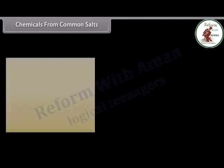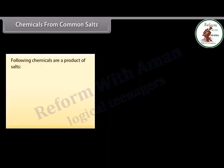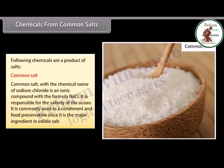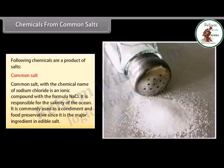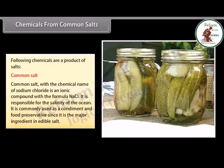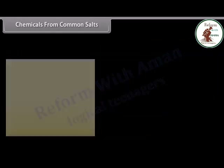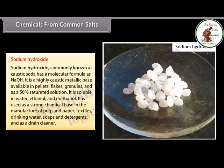Chemicals from common salts: common salt, with the chemical name sodium chloride and formula NaCl, is an ionic compound responsible for the salinity of the ocean. It is commonly used as a condiment and food preservative. Sodium hydroxide, commonly known as caustic soda, has the molecular formula NaOH. It is a highly caustic metallic base available in pellets, flakes, granules and as a 50% saturated solution. It is soluble in water, ethanol and methanol.